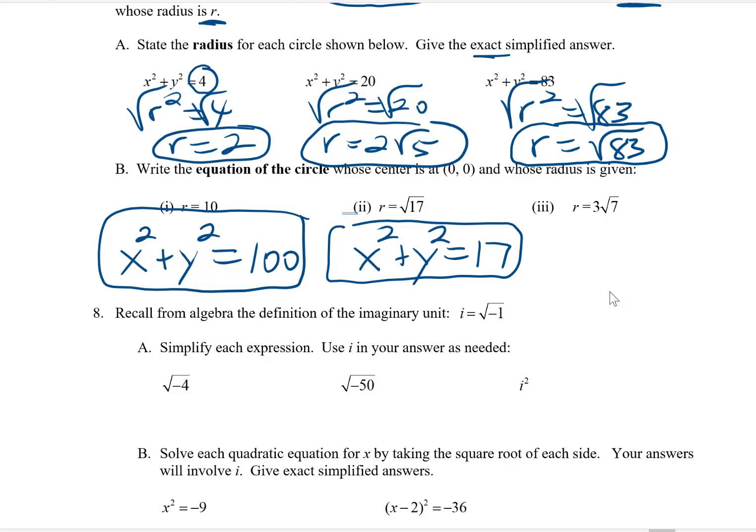In the third example, I need to square that radius. 3 times 3 is 9. Root 7 times root 7 is 7. 9 times 7 gives me 63, and so I would have here x² + y² = 63.